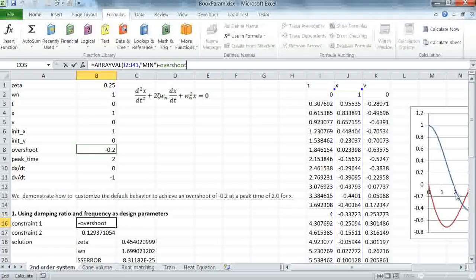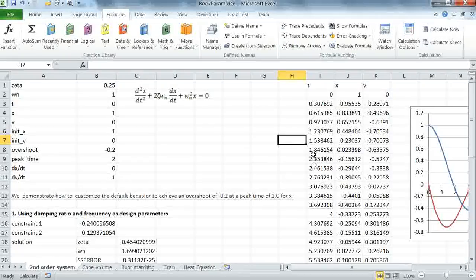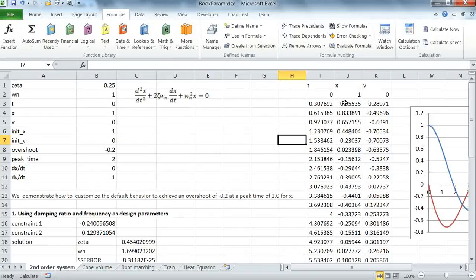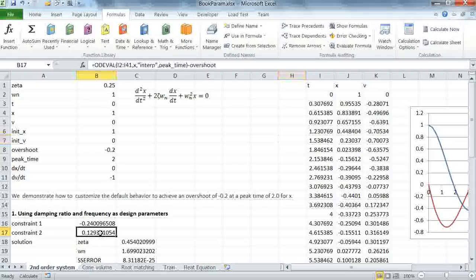My second constraint is I want this to happen at exactly t equal to 2. Now if we look at the solution here, we find that actually we do not have a value for x at time equal to 2. Although we could customize the output to have a value of x exactly at time equal to 2 and use arrayval to extract this value, here we're going to simply use interpolation to calculate the value of x at t equal to 2. And this is my second constraint.